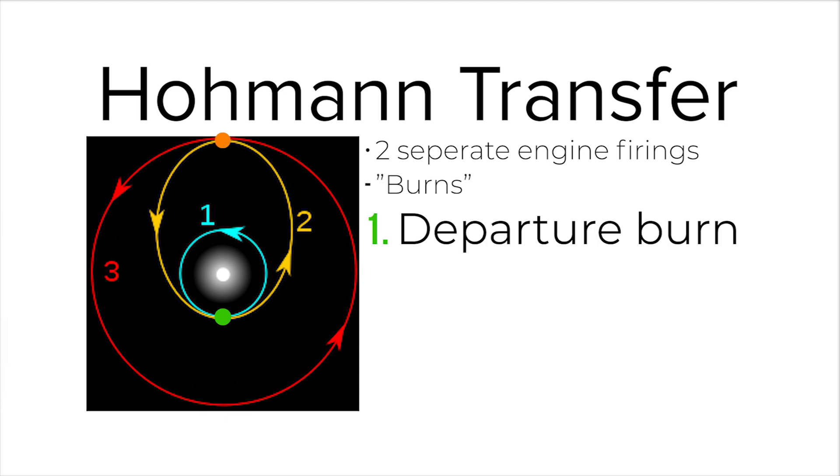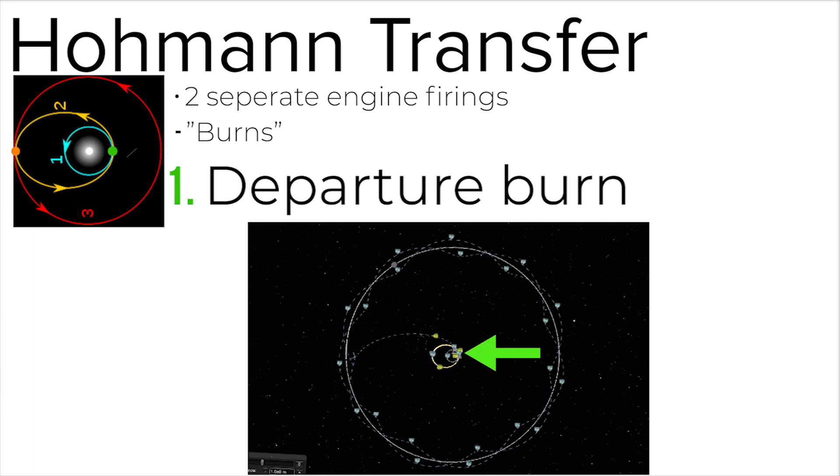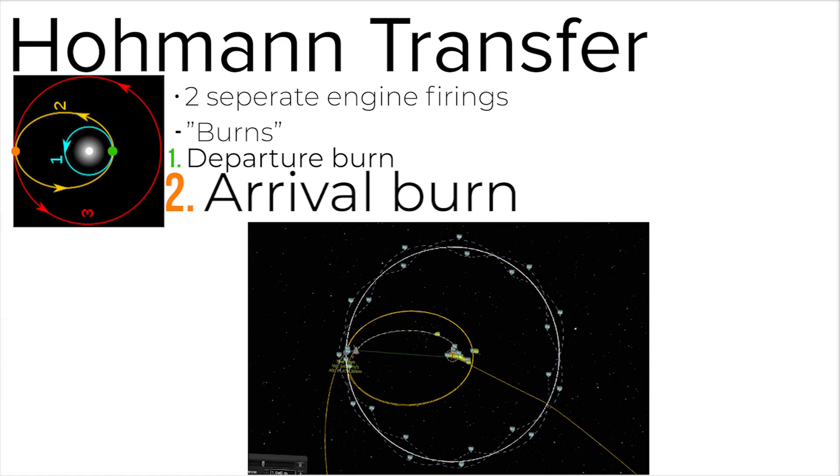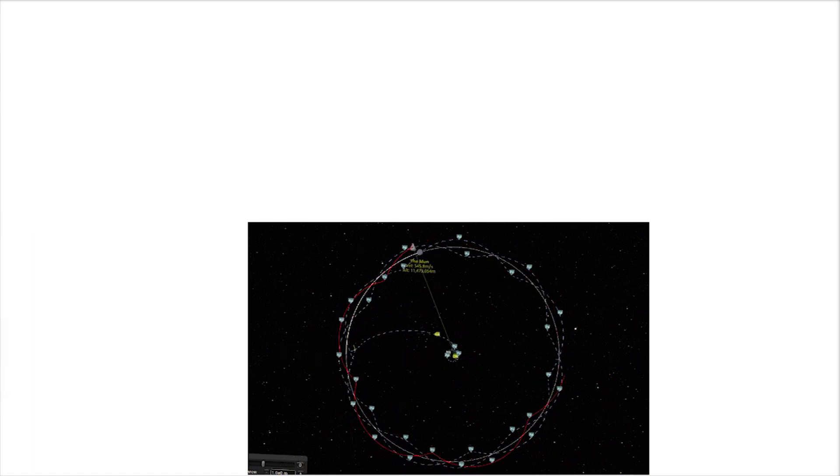The first is the departure burn, basically leaving Earth and speeding to Mars in a highly elliptical orbit, before firing again for the arrival burn to slow down the spacecraft enough to orbit around Mars.